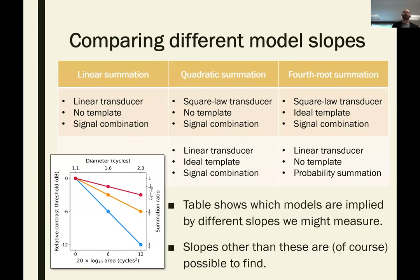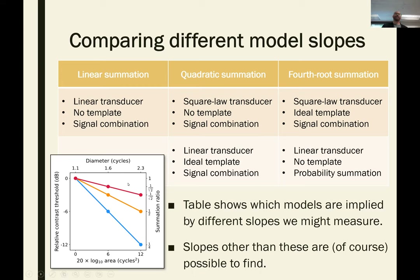For the different model slopes discussed so far, we can see they fall into the categories I showed at the beginning: linear, quadratic, and fourth-root. Linear summation gives a linear slope. Quadratic summation can arise either from a squaring transducer or from a template. Fourth-root summation comes either from the combination of squaring and templating, or from probability summation. Obviously we can find slopes other than these — with a nonlinear transducer you can get anywhere — but these are the canonical, often-considered slopes.